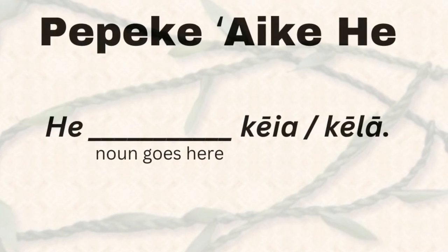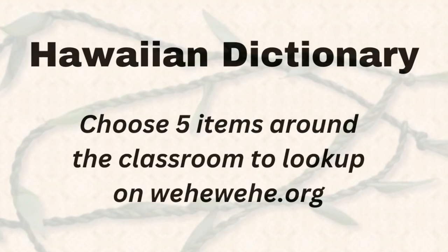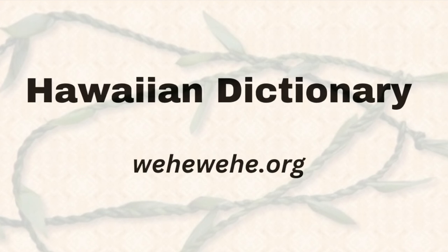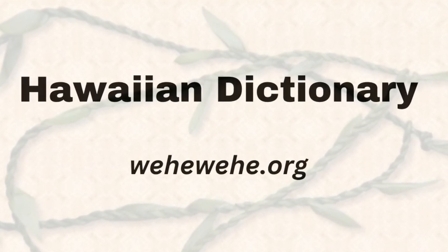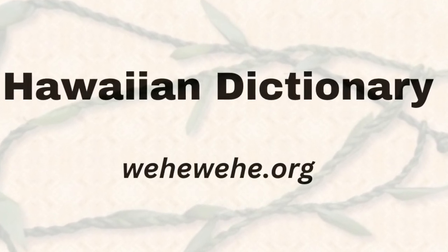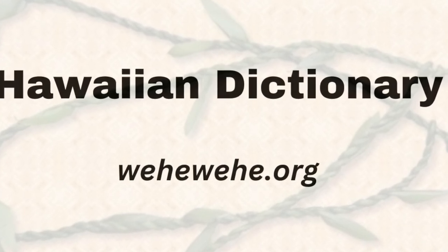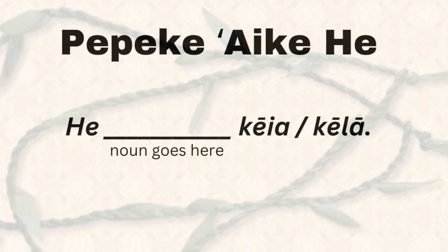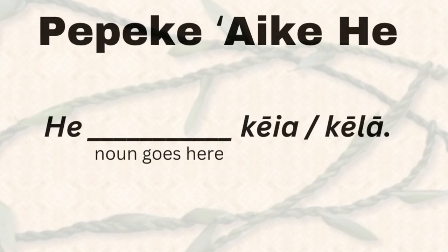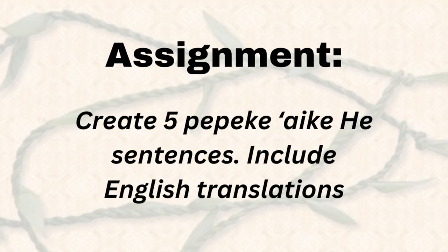Now what I want you to do is look around the room you're in and find five items — five items that you can look up on the Hawaiian dictionary, wehewehe.org. So you're going to go to the Hawaiian dictionary and maybe you chose 'light' — you're going to type in 'light' in English and see what words come up. Then you're going to take that word and insert it in the blank area. Then you're going to also write the English so that I know what you're trying to say. It's very important to have both the Hawaiian and English.